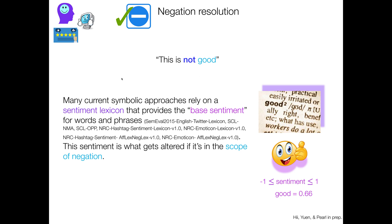And so considering current symbolic approaches, many of them rely on a sentiment lexicon that provides the base sentiment score, usually ranging between negative one and one for words and phrases that are in that lexicon. And this is just a list of a bunch of different lexicons that do that. And the sentiment is what gets altered if it's in the scope of negation. So the base sentiment of good, I'd say in one of these sentiment lexicons, would be 0.66. So it's kind of on the positive side of the world. And you want to alter that if it's in the scope of negation.